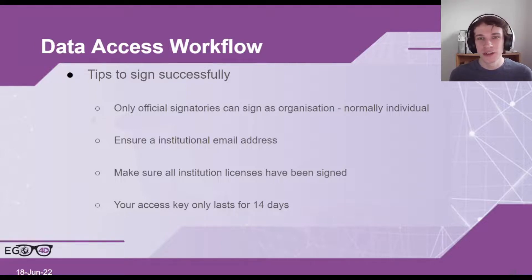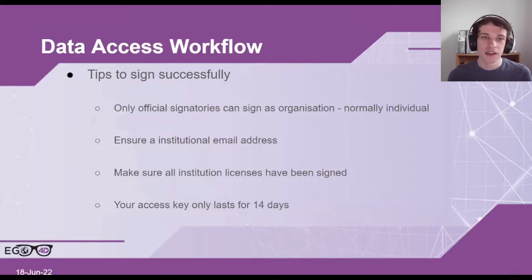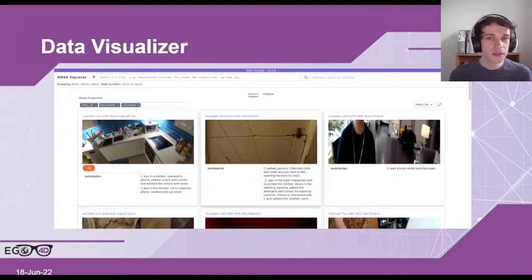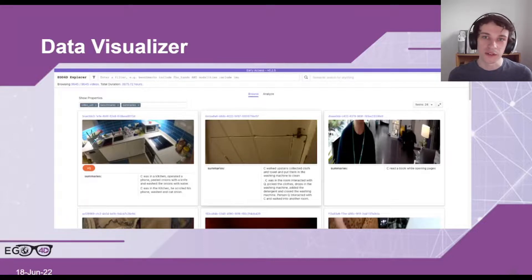We hope that in your first accessing of the data, you'll be able to get your key and then download some data and maybe play around with the visualizer. Then later on, maybe once you're writing up a paper and need some videos for results, you can reapply for your access key. An easy way of checking if your access key works is going to our data visualizer, where you can put in your access key and then view through the dataset and query based on certain benchmark tasks or even content of the videos.